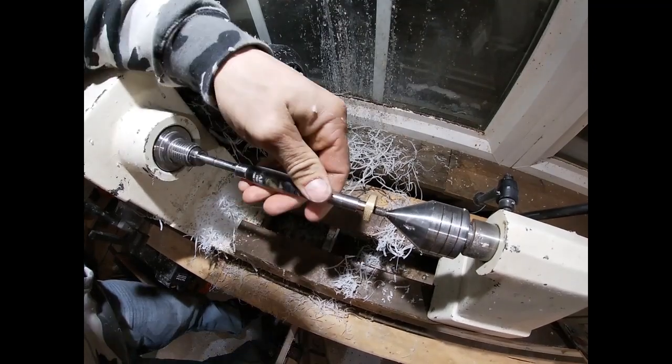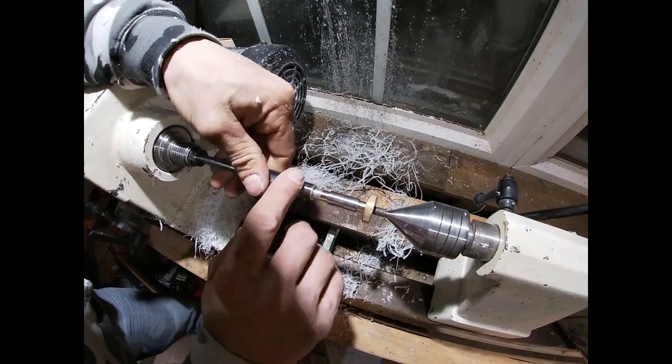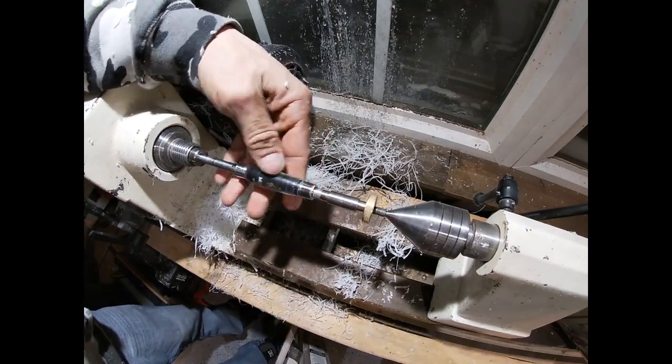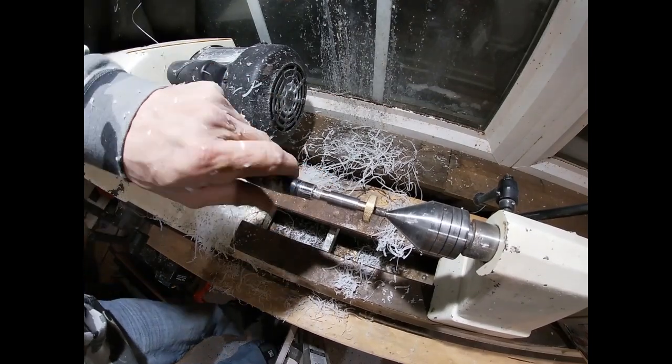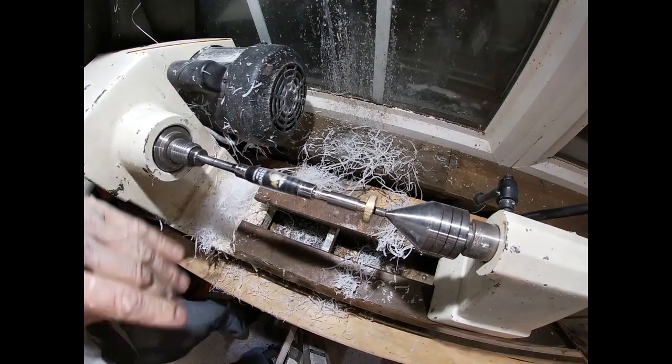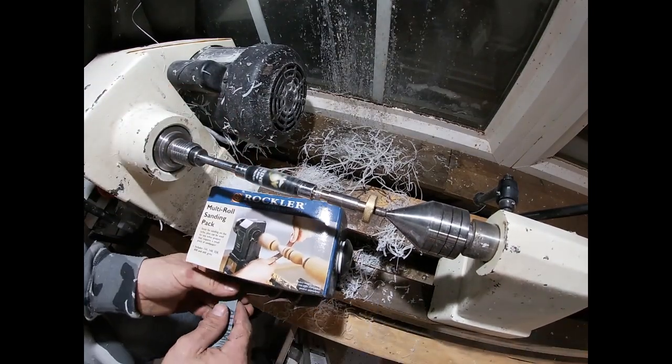Alright, so I got that the shape that I wanted here. I got a couple little nicks out of it there. I'll sand it out, it's barely in there at all, but figured I'd just sand it out instead of risking chipping it out anymore. So I'll start going through my grits here, 150 ranging up to 600.